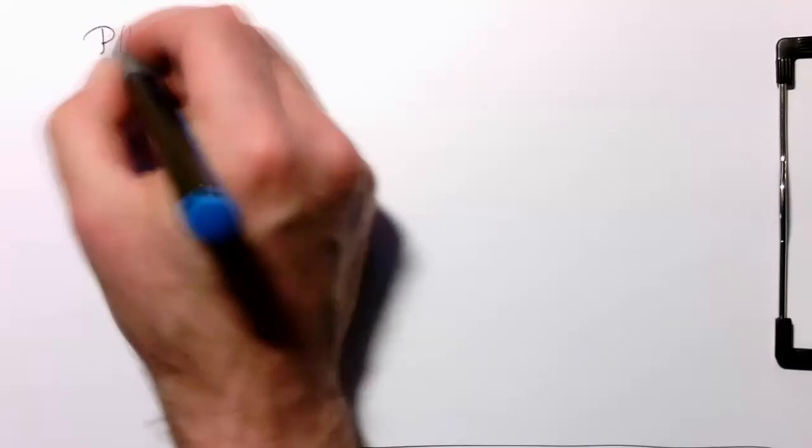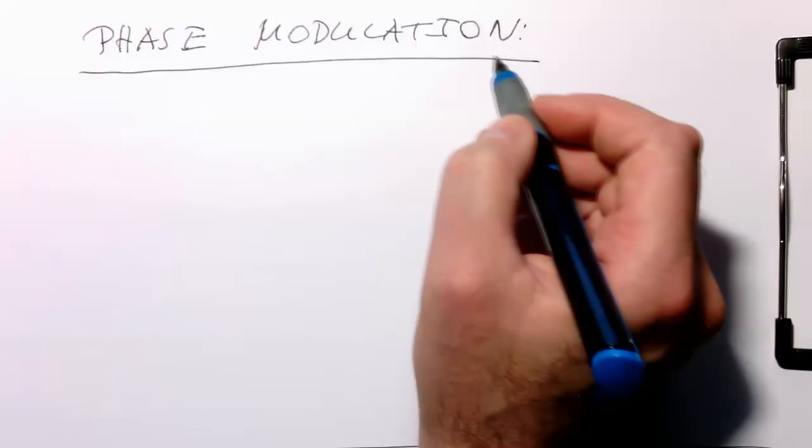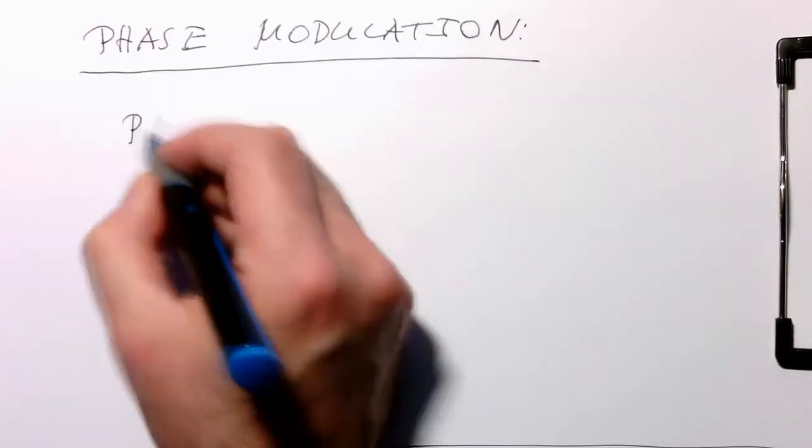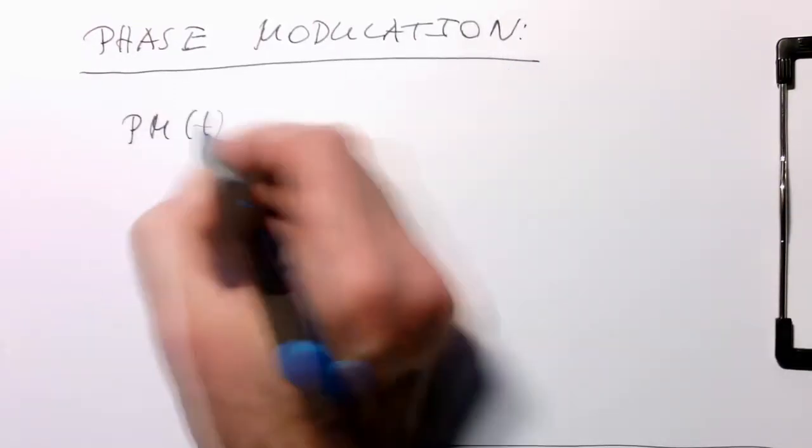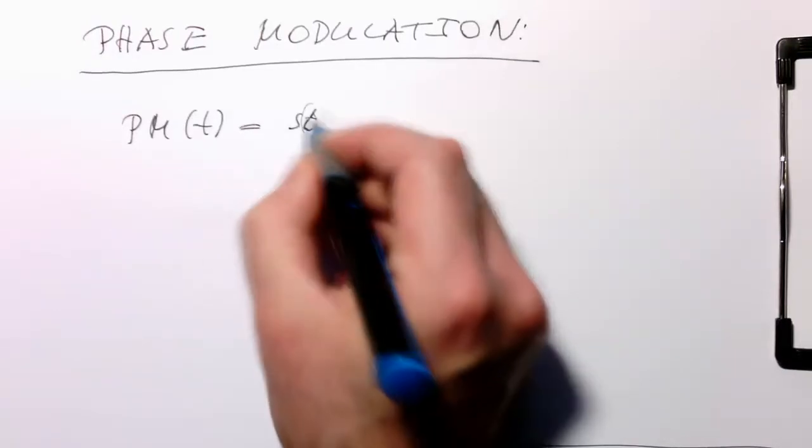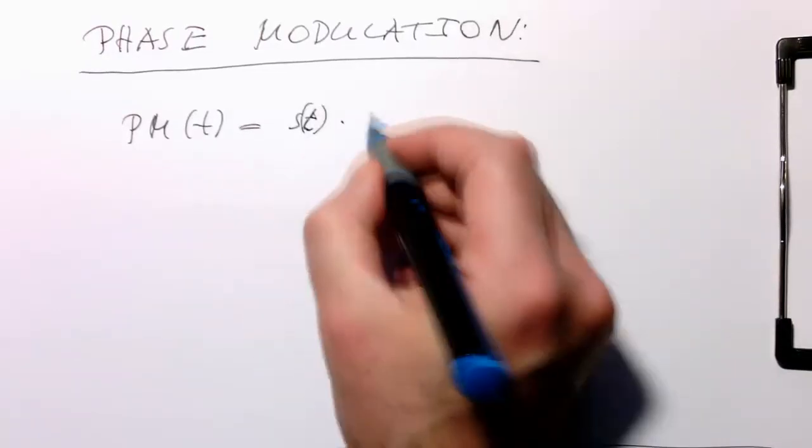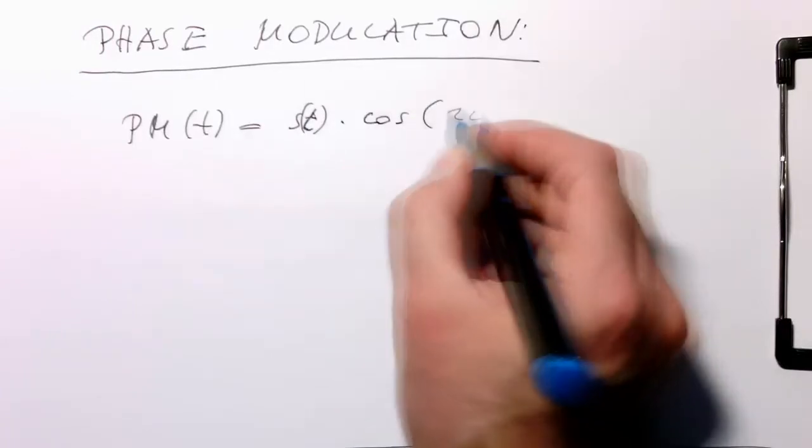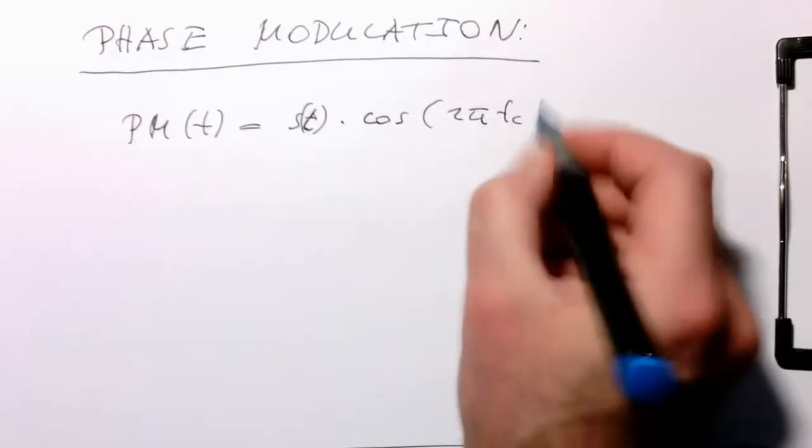The question is now why this is called phase modulation. Let's write this here, our formula down again. This was P_m(t) and then we've got here the S(t) multiplied by cosine of 2π f_c t.